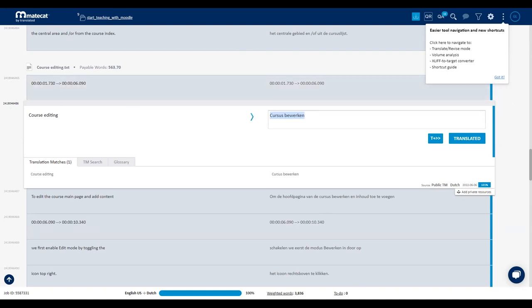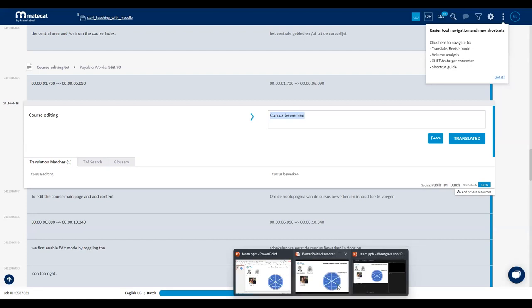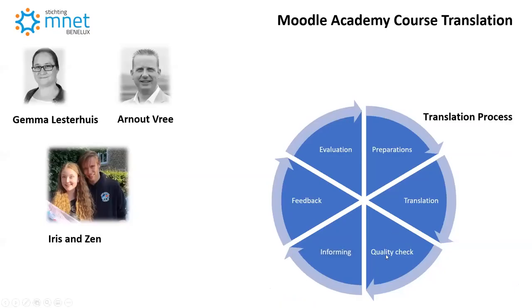Currently once everything is translated and the team signals it's done, we do a quality check — someone else on the team goes through the course or transcripts again, checking for spelling mistakes and typos and making necessary adjustments. When completely done, we inform Moodle Academy and the community that a new course is live. We get feedback from the Academy or the community, make adjustments based on that, evaluate our own process, and then start the next course. This cycle keeps going until we're done.